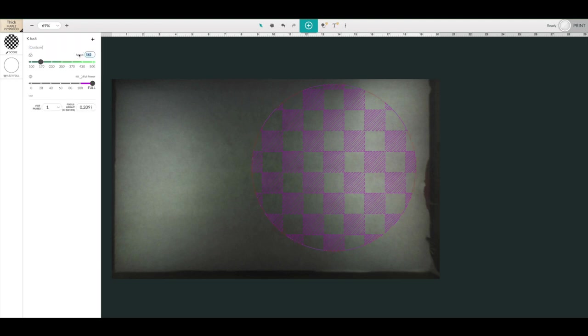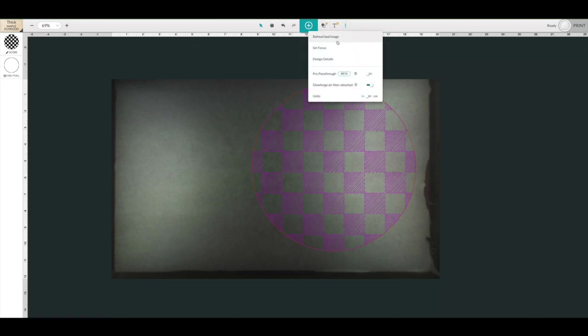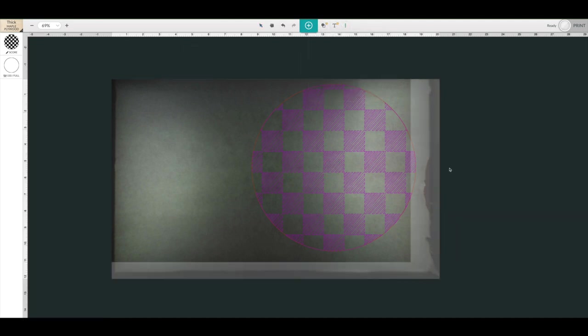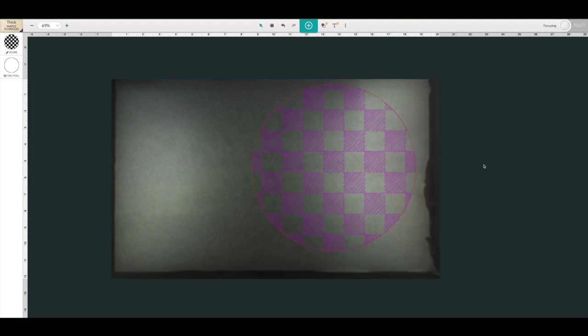And for cut, I always dial this down to 150 for Purebond maple. And then we are going to set focus and we are going to print.